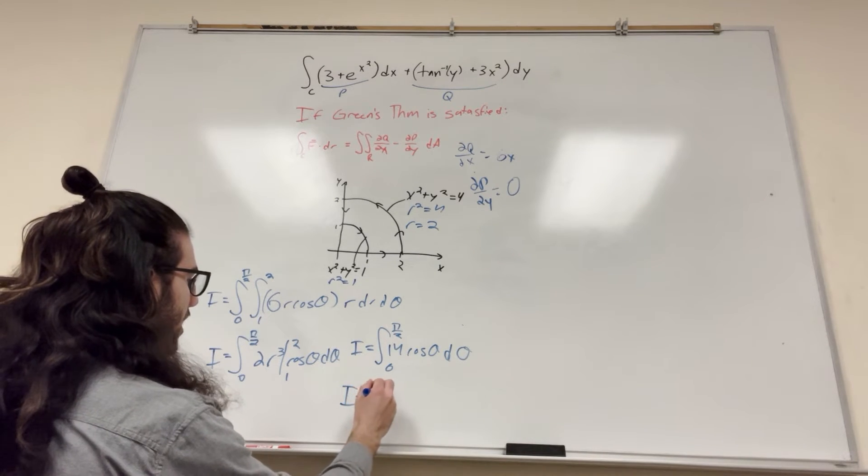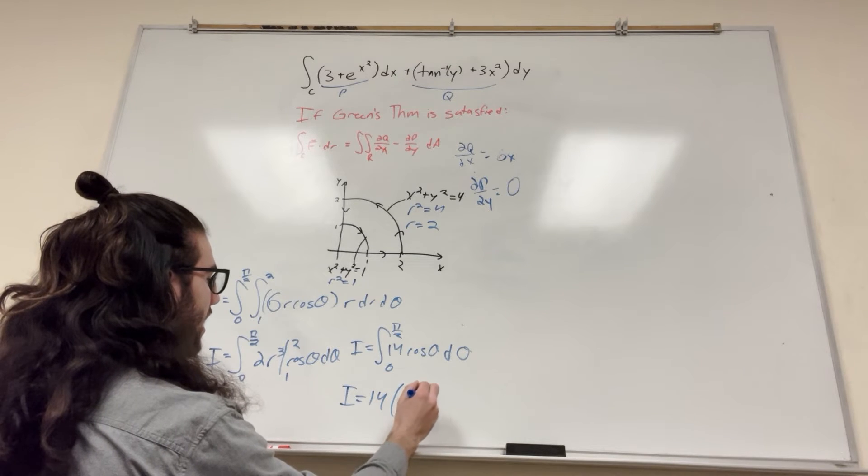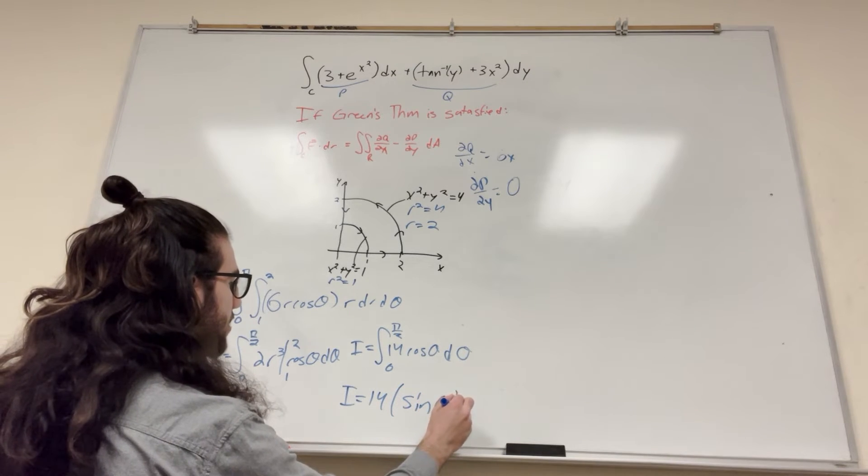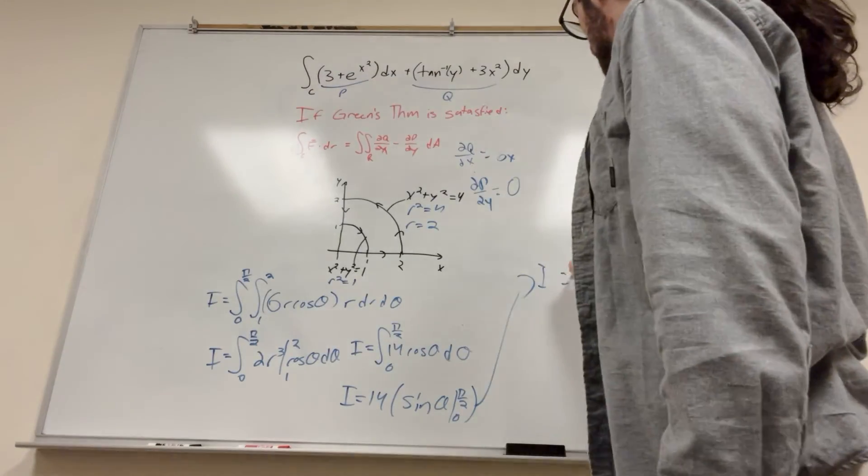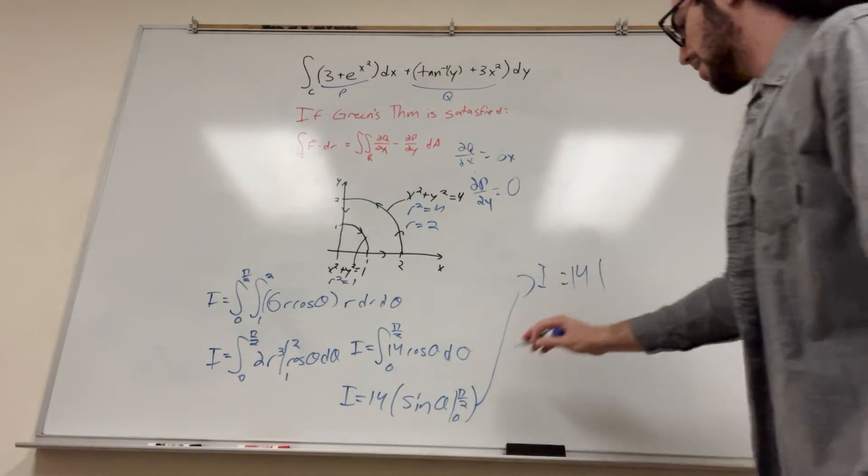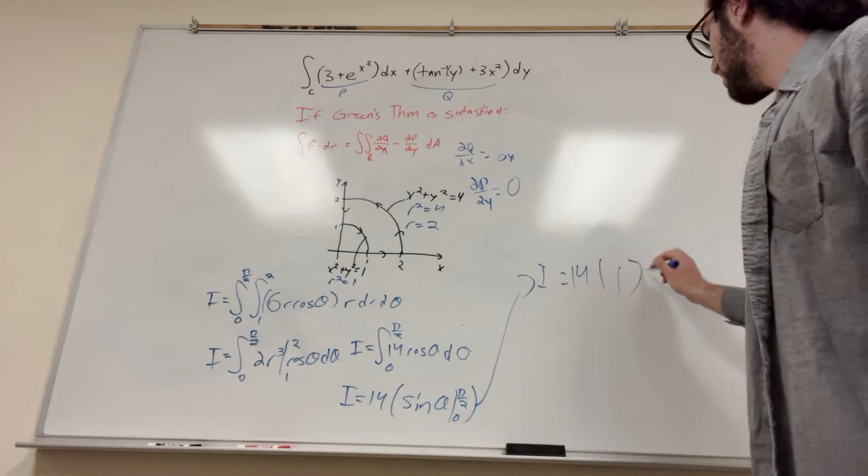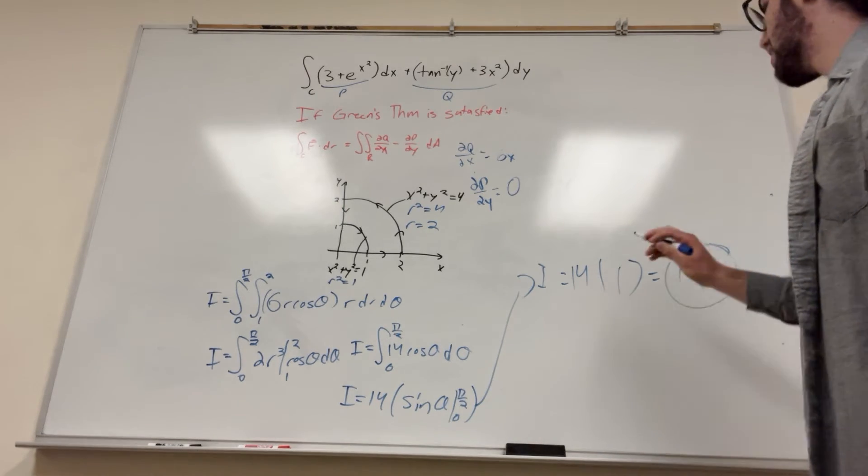Don't forget your d theta like I did. From 0 to pi over 2. Integrating this, it's going to be equal to 14. Bring that out. So it's going to be sine of theta from 0 to pi over 2. Which of course is going to be equal to 14, 1 minus 0, which is equal to 14. That's our final answer.